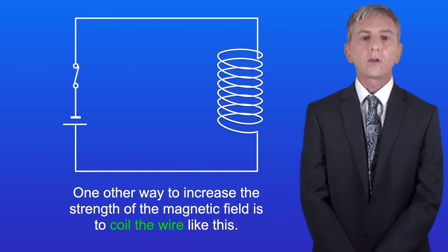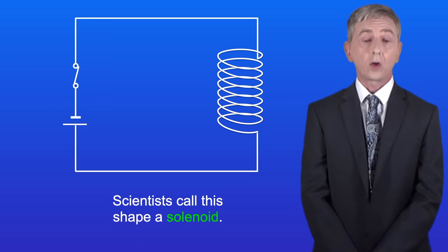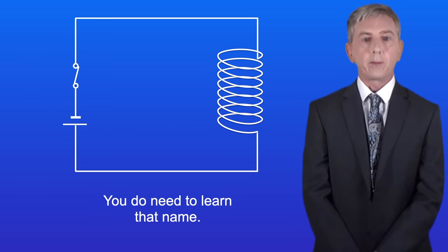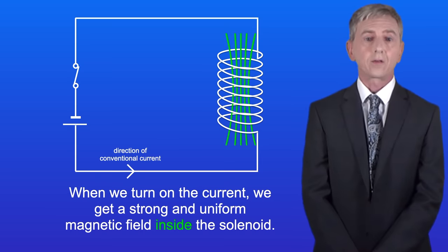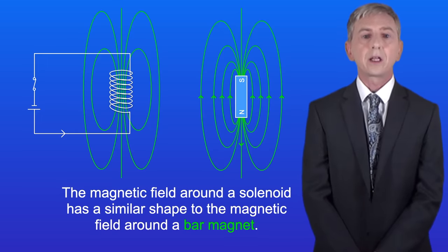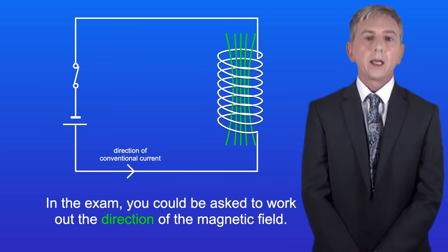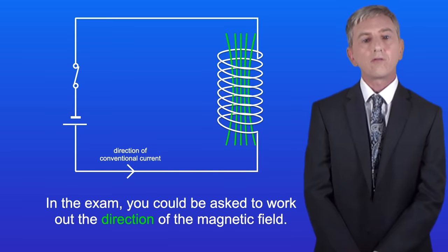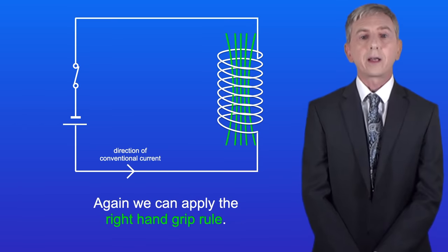One other way to increase the strength of the magnetic field is to coil the wire. Scientists call this shape a solenoid and you do need to learn that name. When we turn on the current we get a strong and uniform magnetic field inside the solenoid. The magnetic field around a solenoid has a similar shape to the magnetic field around a bar magnet.